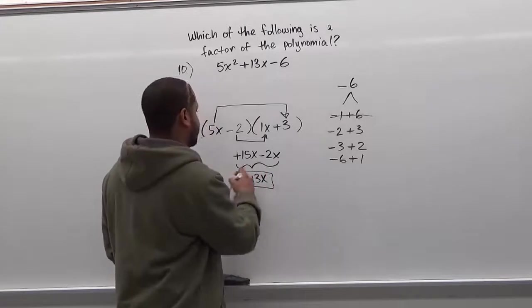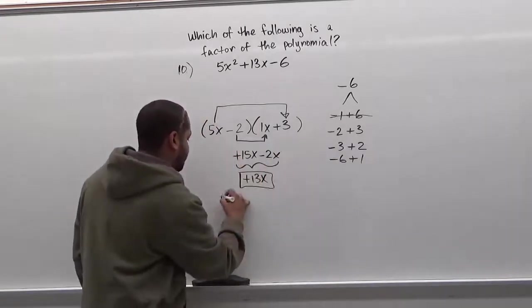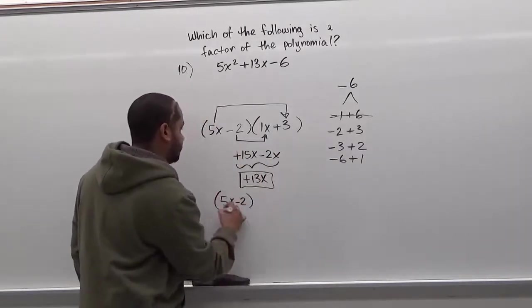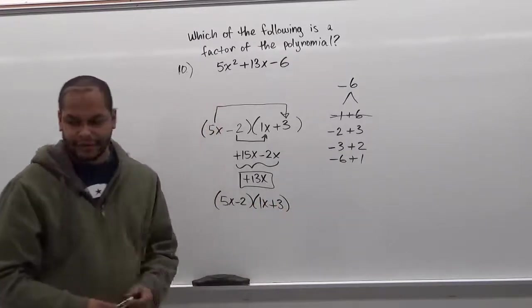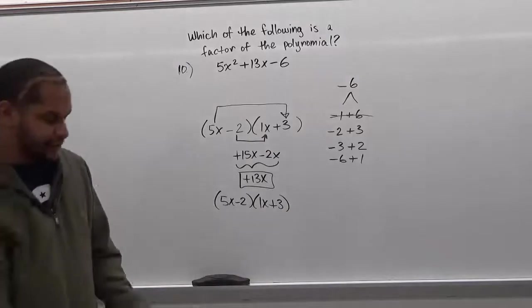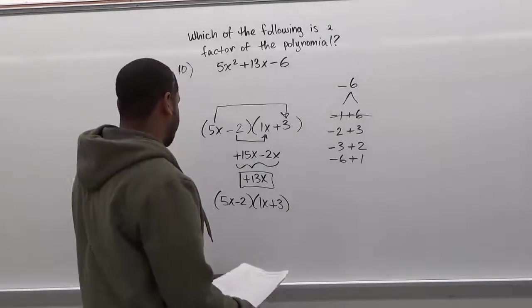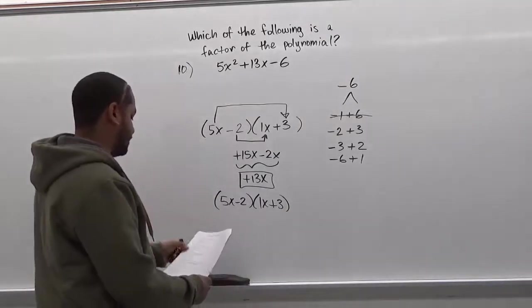So here we have our factors. Our factors are going to be 5x minus 2 multiplying by 1x plus 3. Now we're not done with the problem yet. So we have to take a look at the exam and see which of these are one of the four answers that we have available.